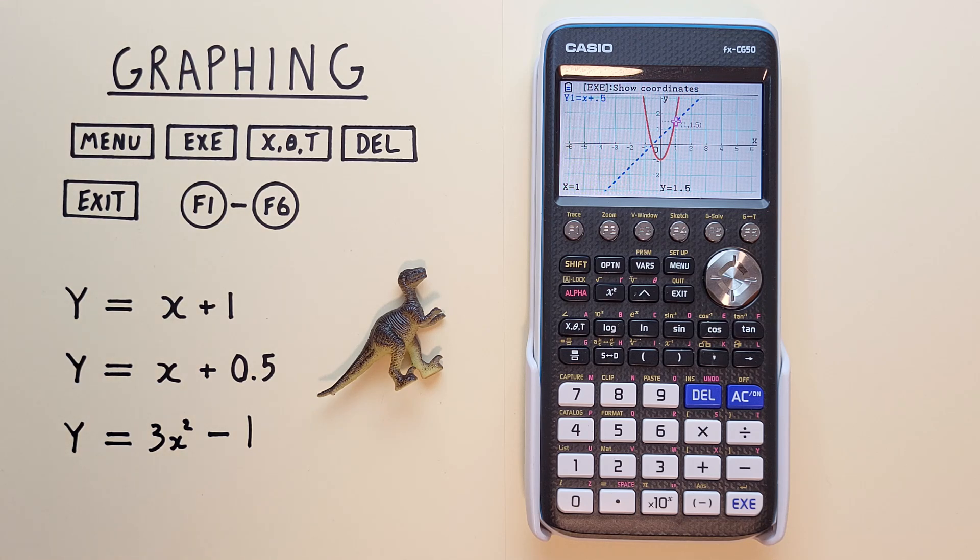If we want to see the Y value at a specific point, we can just enter the X value. For example, let's see what Y at X equals 2 is. To do that, we press 2,